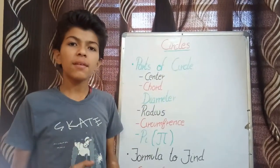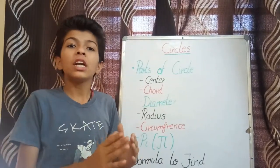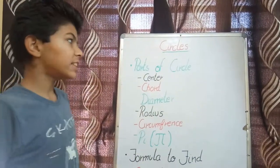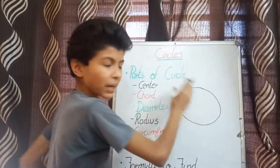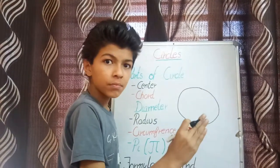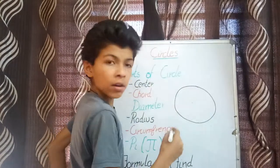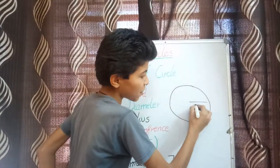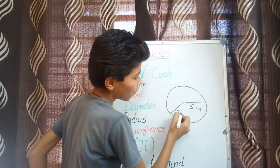So friends, what is a circle? A circle is a set of all the points that lie at an equal distance from a point called the center. It is closed and does not have any straight lines — it is made up of a curved line. All the points lie at an equal distance from the center. For example, if this distance is 5 cm, then this distance would also be 5 cm.